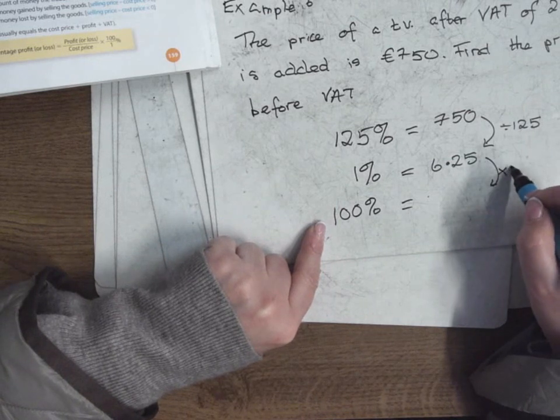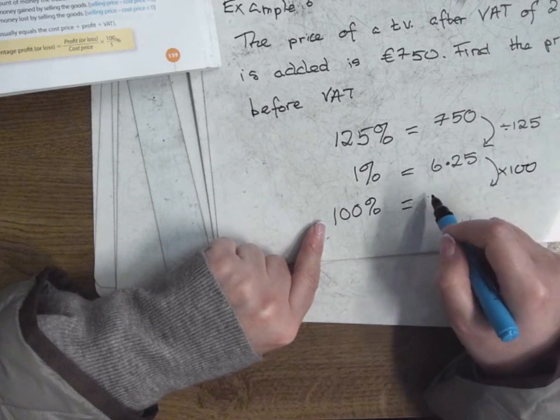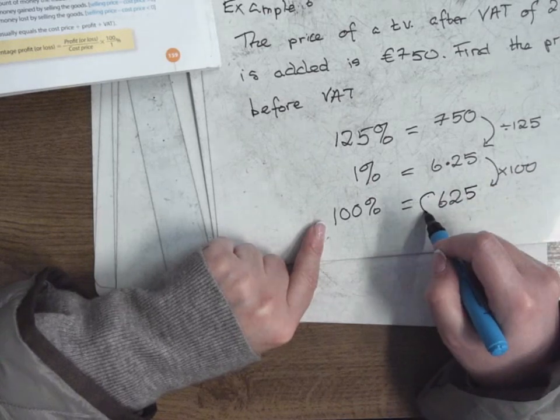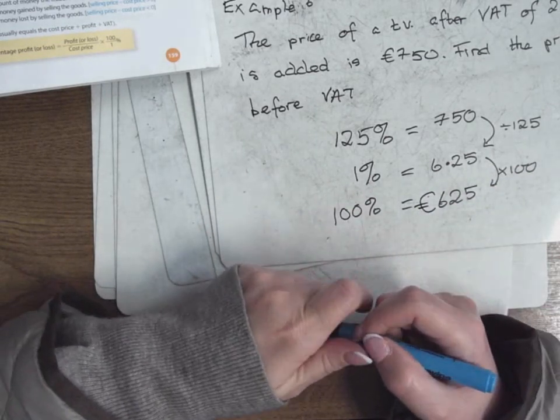Multiply by 100. So when you multiply by 100, you go up to €625. Is that all right?